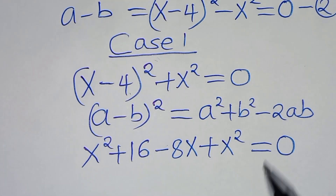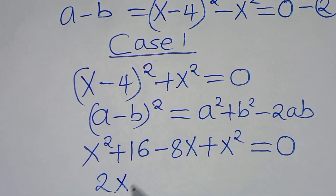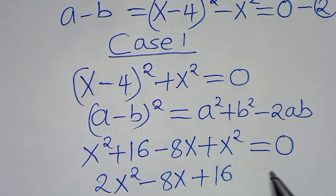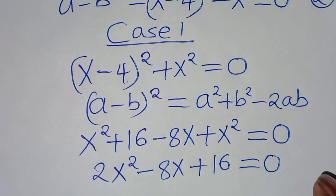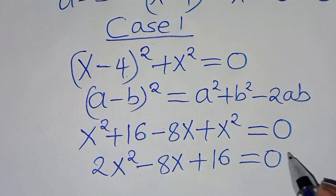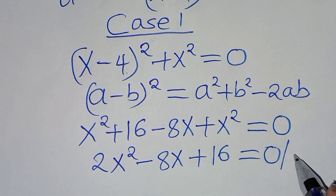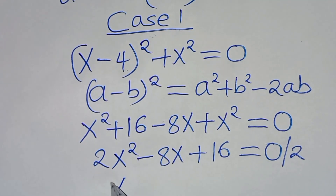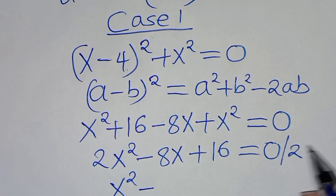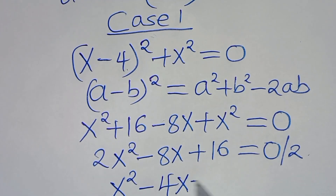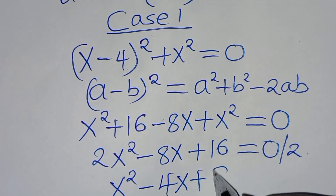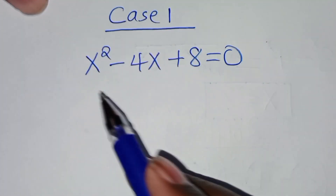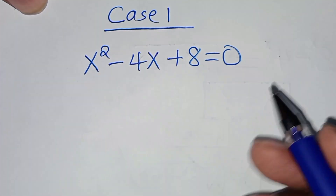So x squared plus x squared is 2x squared, then subtract 8x, then plus 16, this is equal to 0. Now we can divide this equation by 2, so that we have x squared minus 4x, then plus 8, and this is equal to 0. So we have x squared minus 4x plus 8, this is equal to 0.